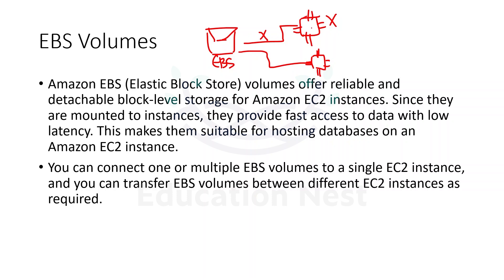In case of EC2 failing, you simply detach the EBS volume and attach it with another EC2 instance. Because these volumes are mounted on the instances, they provide faster access to data with low latency. That's why we can also host our databases on EC2 instances.